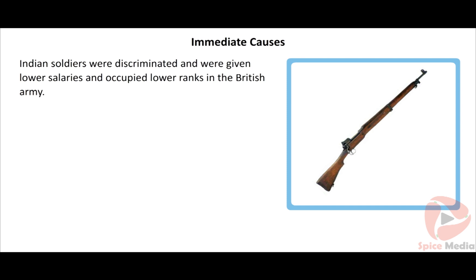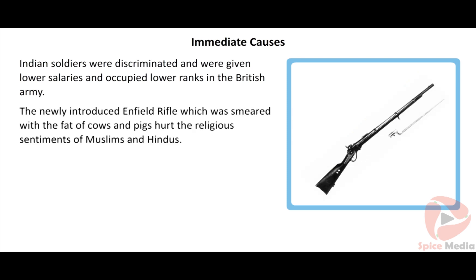Important cities like Delhi and Allahabad were under Indian soldiers. Immediate causes: The major part of the British army in India was composed of Indians, forming seven-eighths of the total government troops. All higher posts were reserved for the English, creating a great disparity in salaries between Indian and European soldiers. The introduction of the new Enfield rifle created further discontentment among the soldiers.